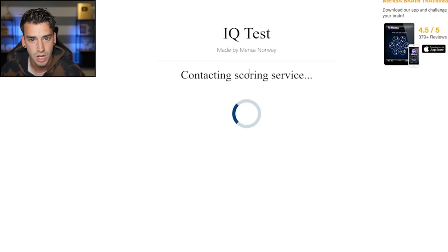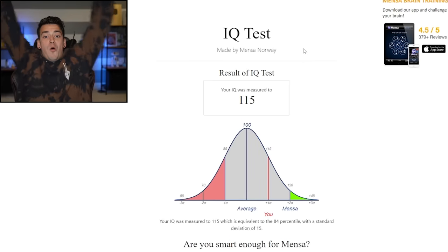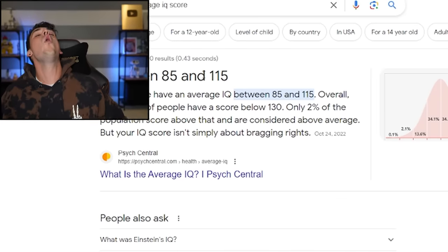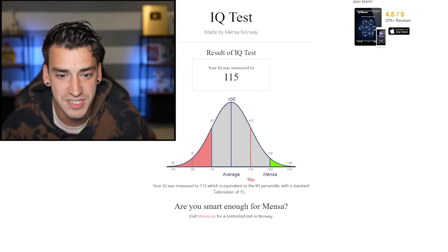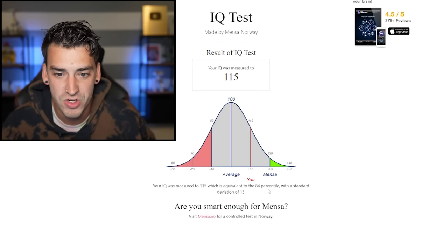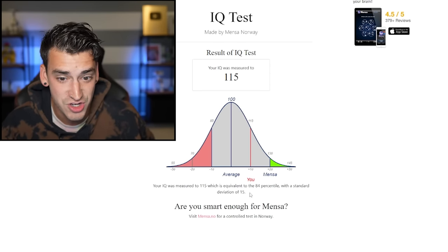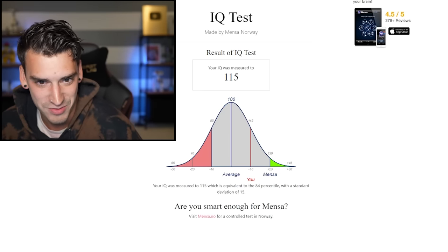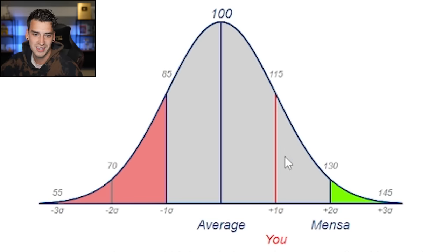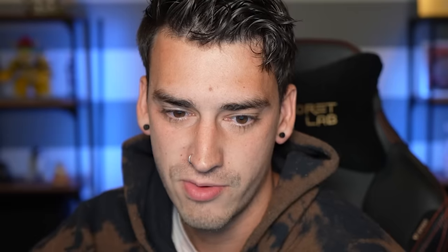Oh, you're right. I should. 115. Oh my gosh. Hang on. That's the average, right? Oh, I was one point away from being a genius, dude. Oh dude. 115. Your IQ was measured to 115, which is equivalent to the 84 percentile, which is a standard deviation of 15. I don't know what that means. Oh man. Are you smart enough for Mensa? No, I don't want to ever do that again. That was really scary. Look at that. Look at that line. You see that? That's me. Dude, people are this. That's crazy.